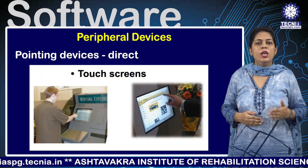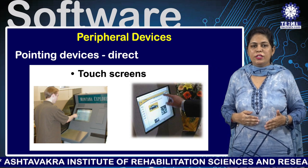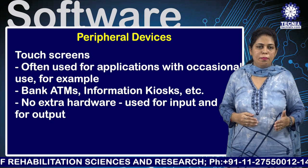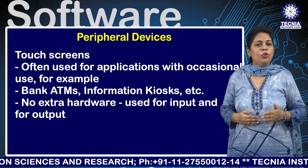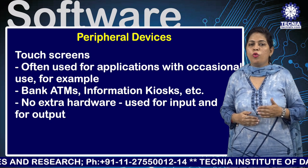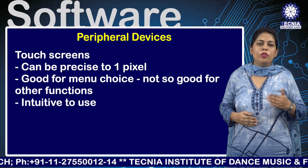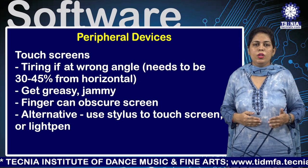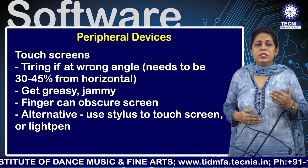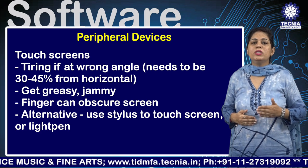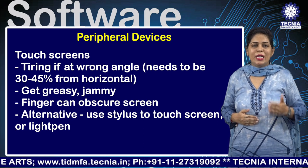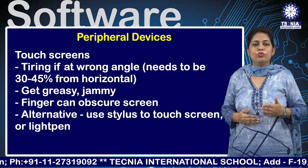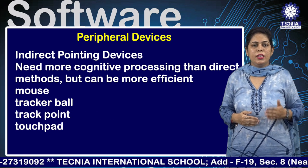Touch screens are often used for applications with occasional use, for example bank ATMs and information kiosks. No extra hardware is needed for input. Touch screens can be precise to one pixel, are good for menu choices, and are intuitive to use. However, they can be tiring if at the wrong angle — they need to be 30 to 45 degrees from horizontal — and fingers can get greasy and obscure the screen. An alternative is to use a stylus.